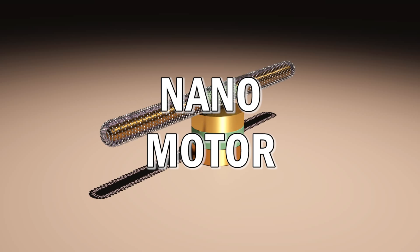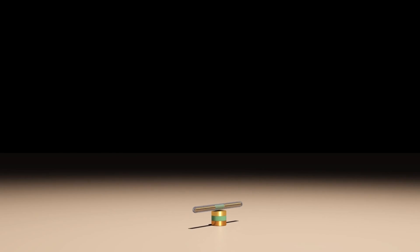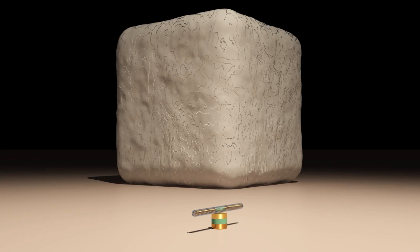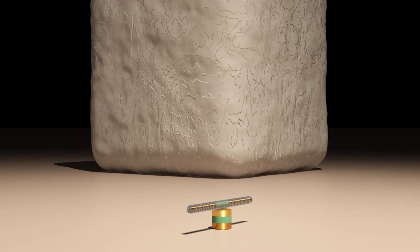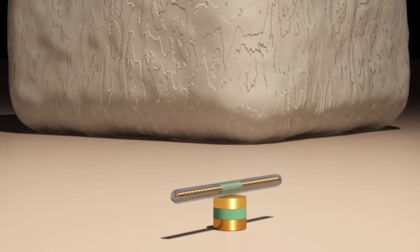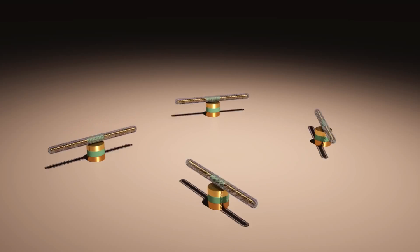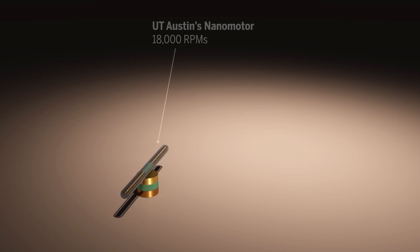We've seen nano motors before, but now the Cockrell School of Engineering at the University of Texas has created a motor under one micrometer in size, which is 500 times smaller than a grain of salt and small enough to fit inside a human cell. Now that might seem pretty amazing enough on its own, but this nano size motor is capable of running up to 15 continuous hours at 18,000 revolutions per minute. That's the speed of a turbine in a jet engine.